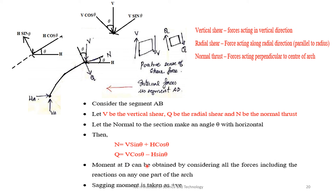The bending moment at point D is obtained by considering all forces including reactions on any one part of the arch. Sagging moment is taken as positive — that is, an anticlockwise moment in the right-hand section of the arch. This concludes the introduction to the analysis of arches, covering circular and parabolic types. Problems will be discussed in the coming lectures.